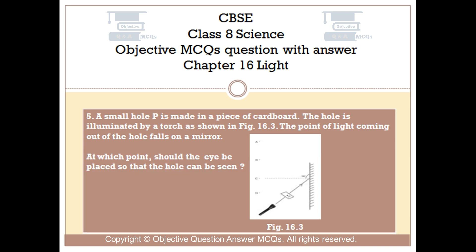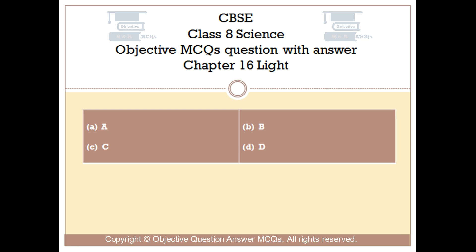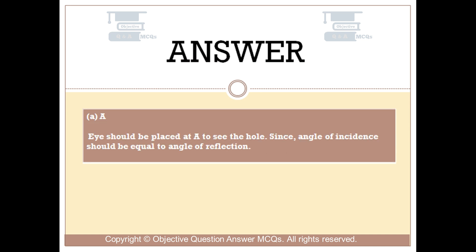Question number 5: A small hole P is made in a piece of cardboard. The hole is illuminated by a torch as shown in figure 16.3. The point of light coming out of the hole falls on a mirror. At which point should the eye be placed so that the hole can be seen? Option A. Option B. Option C. Option D. The right answer is option A. The eye should be placed at A to see the hole, since the angle of incidence should be equal to the angle of reflection.